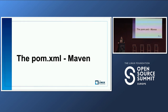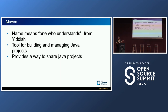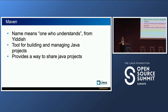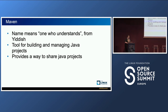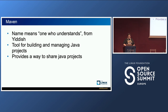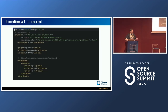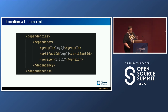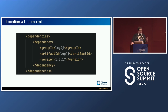Let's take a look at Maven. Maven uses a file called pom.xml. The name Maven means 'one who understands' in Yiddish. It's a tool for building and managing Java programs, and it provides a way to share those projects via the Maven Central Repository, where you can upload your projects and download others. In the pom.xml there's a section for dependencies — each dependency object is comprised of a groupId, artifactId, and version, which Maven uses to find the specific artifact in the Maven Central Repository.